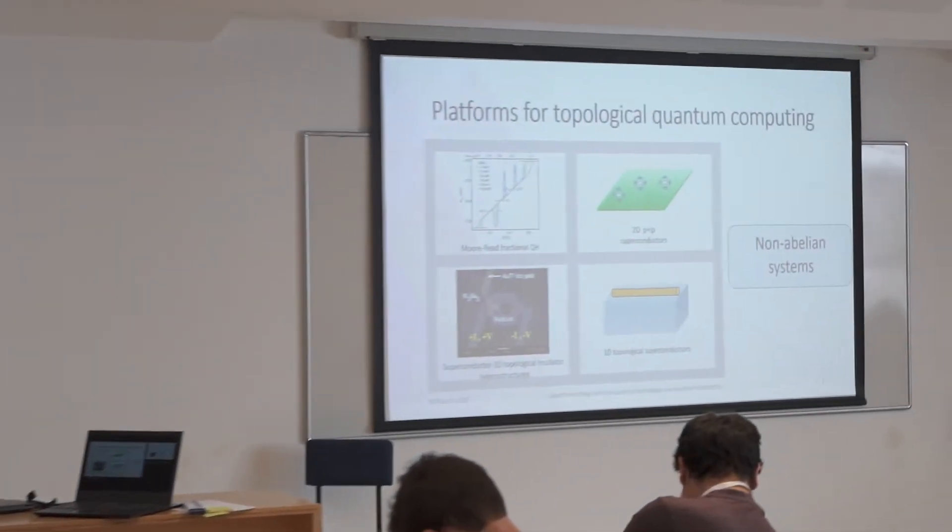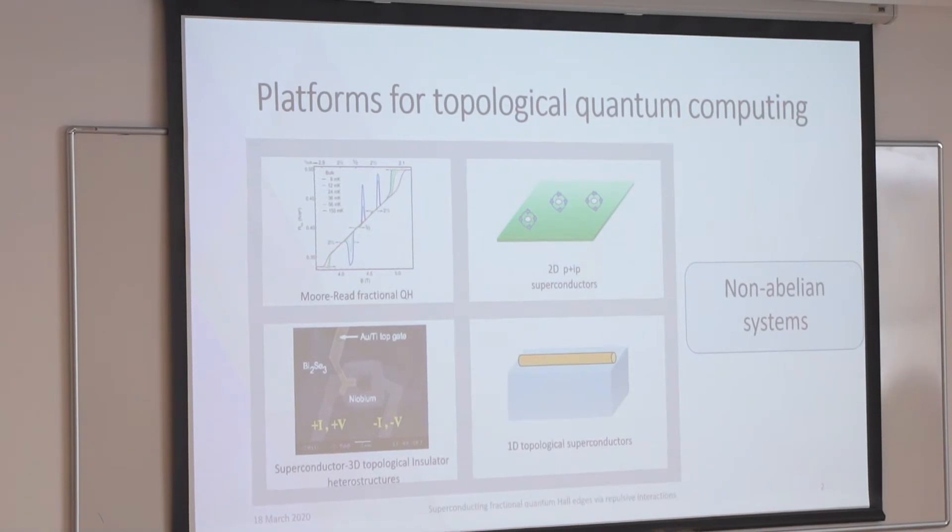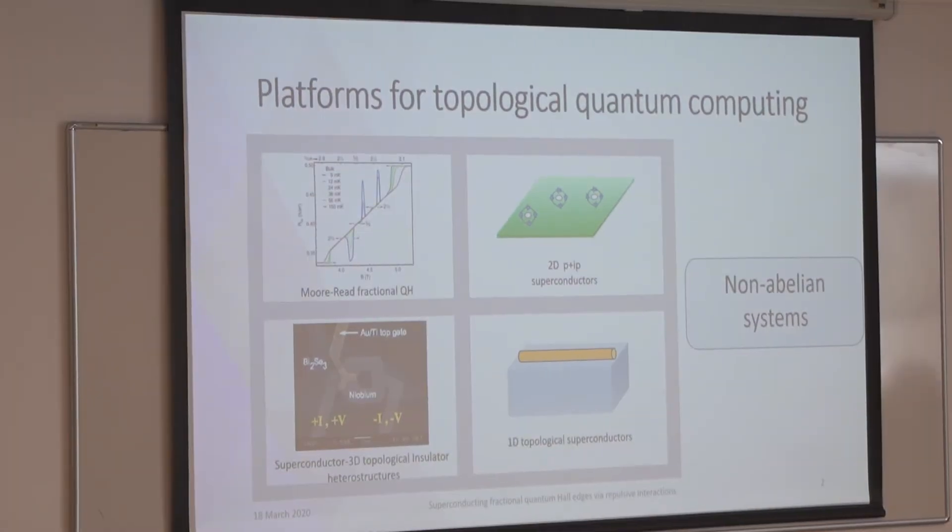Thank you for the kind introduction. I want to tell you about the work I did under the supervision of Netanel Linder and in collaboration with Adistern Ersberg from the Weizmann Institute. In this work, we show how one can induce a superconducting energy gap in the fractional quantum Hall edge states by using repulsive interactions. The motivation starts with topological quantum computation, which is a scheme for building a quantum computer that benefits from high tolerance to quantum decoherence and is based on a non-abelian system.